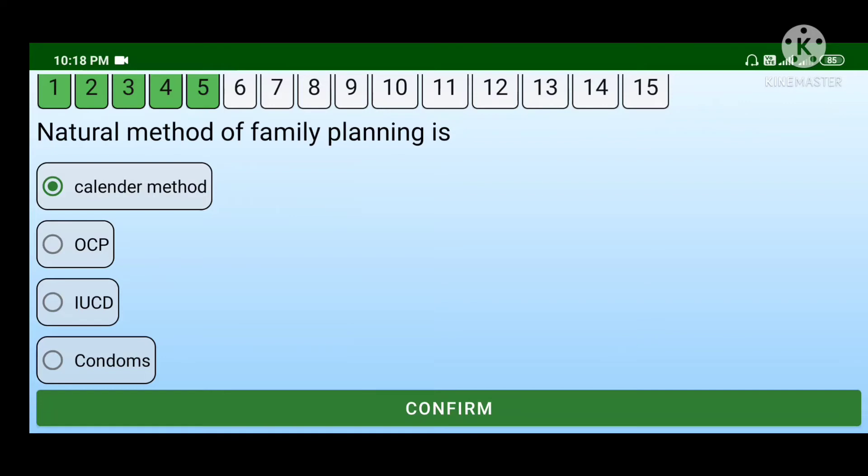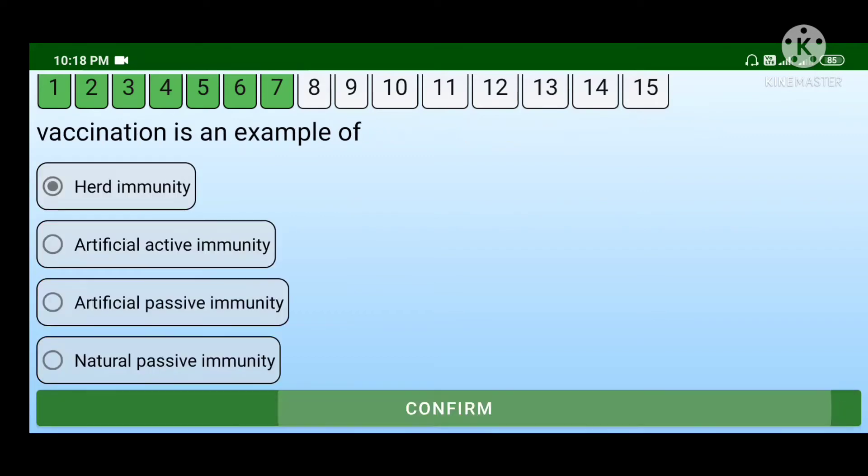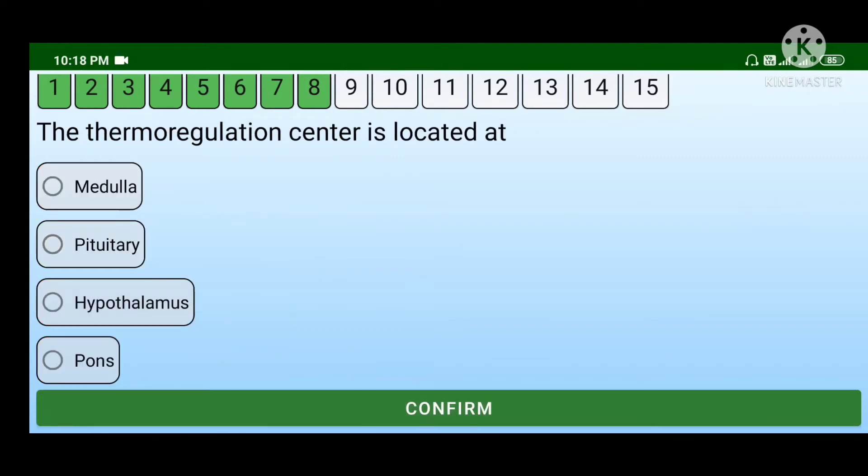The stool discharge from the ostomy is called effluent. Vaccination is an example of artificial active immunity. The thermoregulation center is located at medulla, pituitary, hypothalamus, or pons, and the correct answer is hypothalamus.